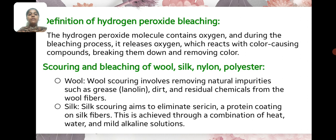Definition of Hydrogen Peroxide Bleaching: The hydrogen peroxide molecule contains oxygen, and during the bleaching process it releases oxygen which reacts with the color-causing components, breaking them down and removing the color.